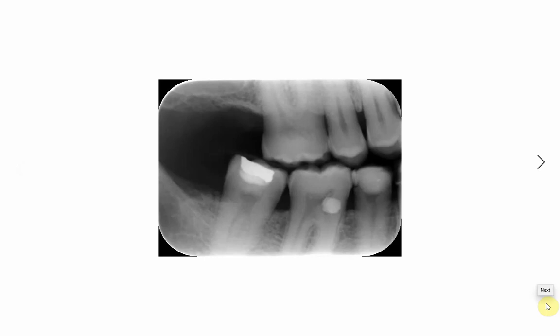Welcome again everybody to a new video in which we will discuss the appearance of different restorative materials on radiographs. In this bitewing radiograph of the premolar-molar region, we will see that there are three teeth which are filled. The lower 7 has a class 1 filling — this radio-opacity is for the amalgam filling because it is the whitest or most radio-opaque filling material, along with gold and metal crowns.